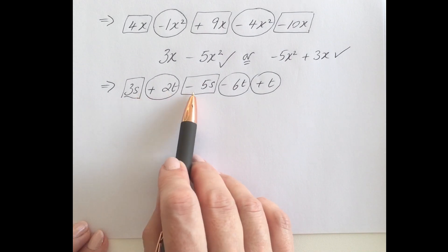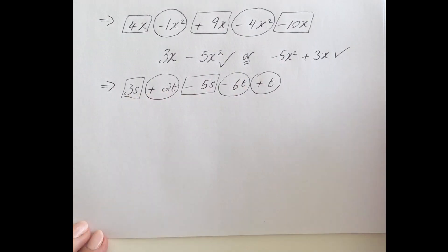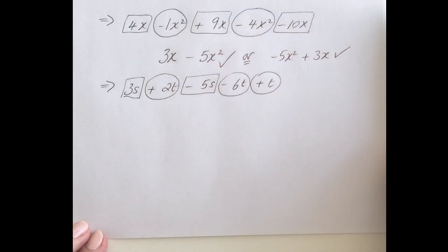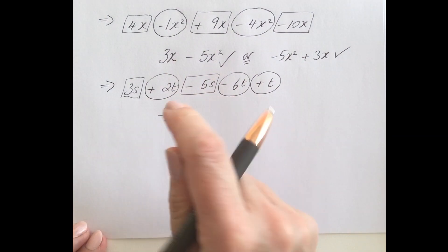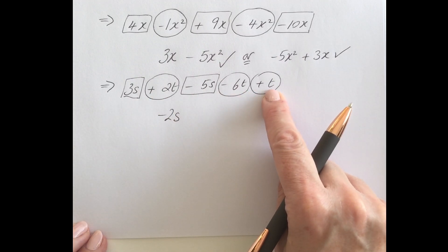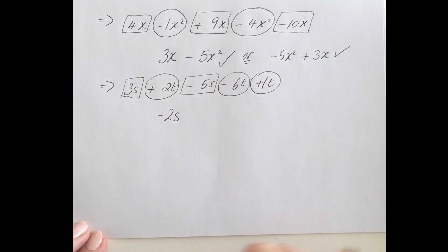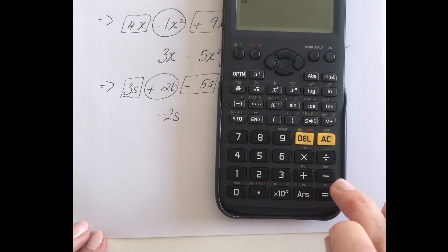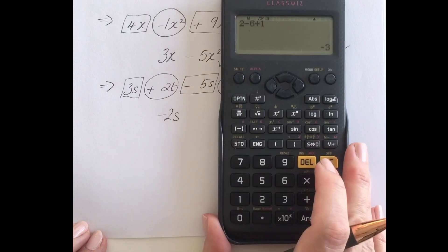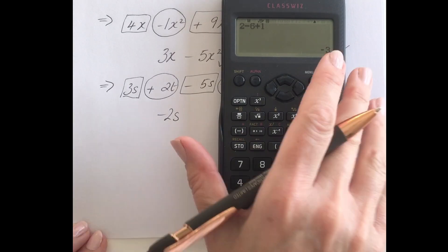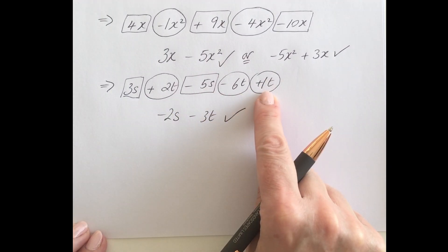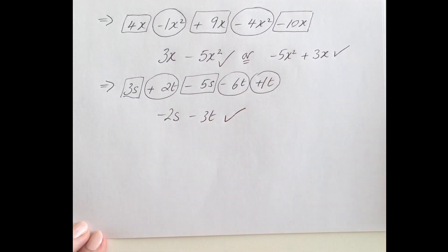For the s terms: 3s minus 5s — 3 take away 5 is minus 2, so that's minus 2s. For the t terms: 2t minus 6t plus t — that last t is plus 1. So 2 take away 6 add 1 gives minus 3t. Remember you can do the number work on the calculator — just don't forget to put the variable letter at the end. Final answer: −2s − 3t.